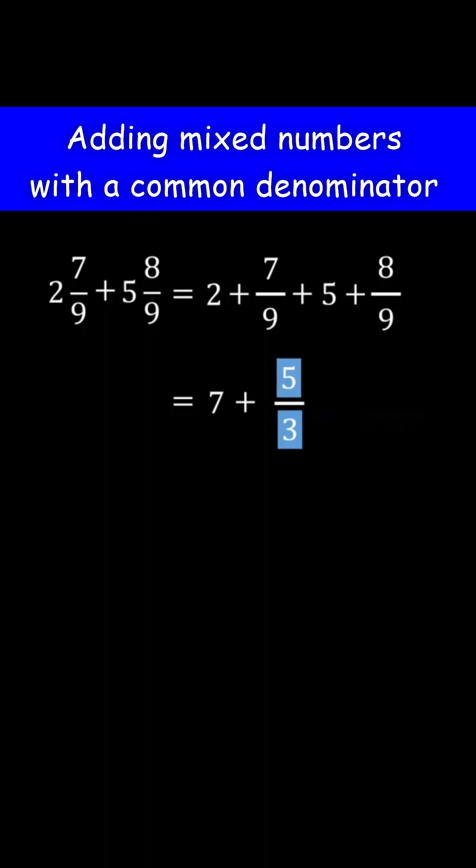5 over 3 is an improper fraction, so we need to write it as a sum of a whole number and a proper fraction. We are doing this because the fraction part of a mixed number is always a proper fraction. 5 is the same as 3 plus 2. This is the same as 3 over 3 plus 2 over 3.